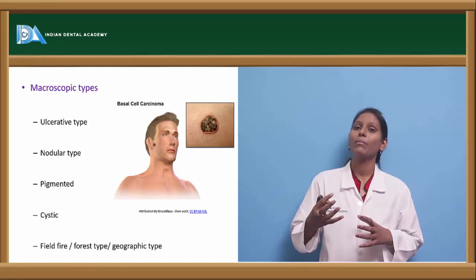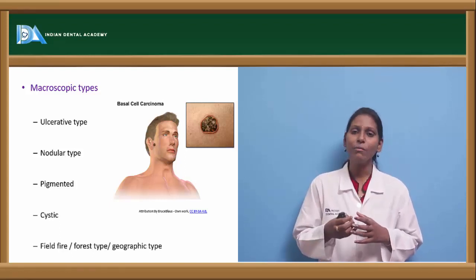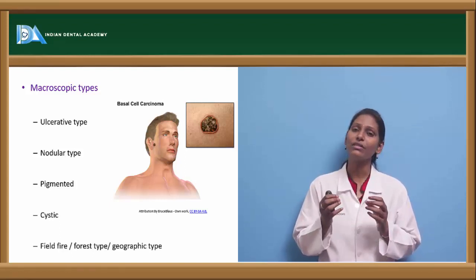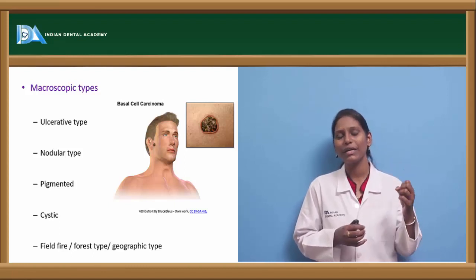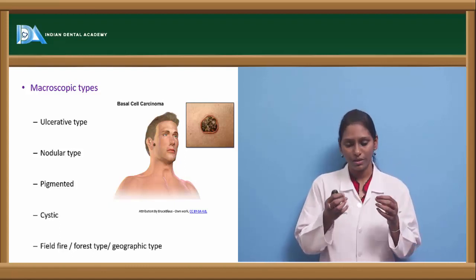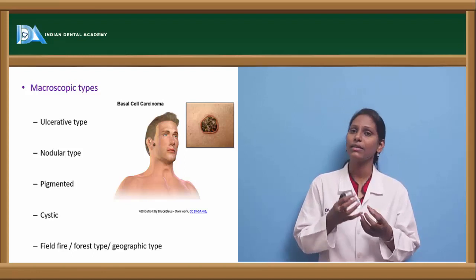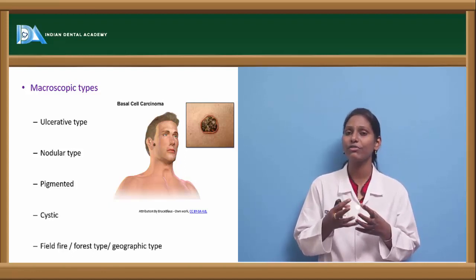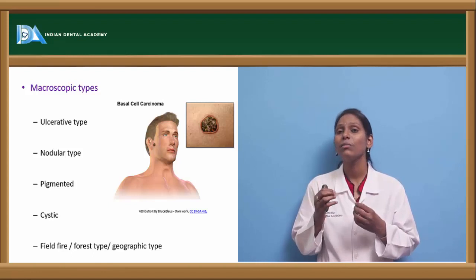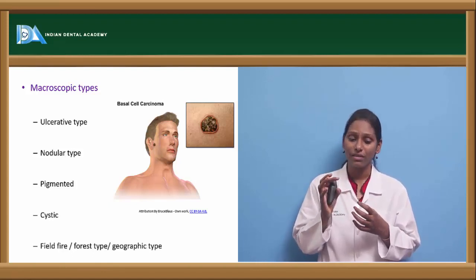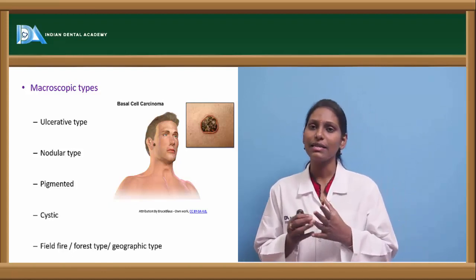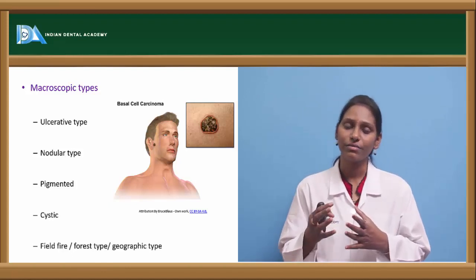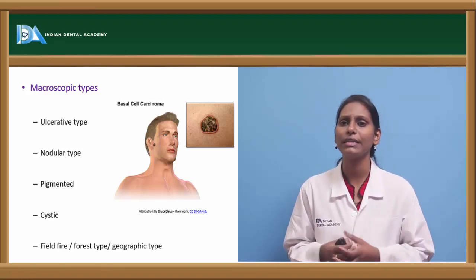Hence we can see more predominance of this especially in Australia, because of the high actinic value of sunlight — high UV radiation component. We can see basal cell carcinomas in areas where there is more UV radiation in the sunlight. As said, they are of two types: solitary and multiple.